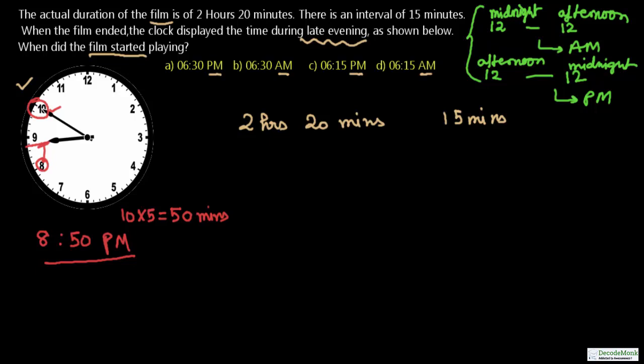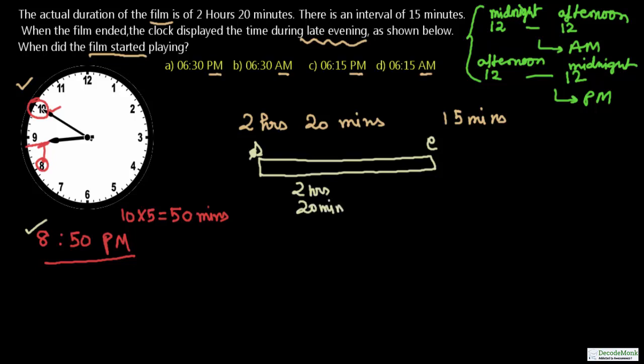Now we know the end time is 8:50 PM. The actual duration of the film is 2 hours 20 minutes, and there is an interval of 15 minutes. So the total time span between the start and the end of the film, including the interval, will be 2 hours 20 minutes plus 15 minutes.